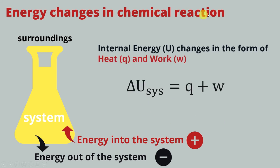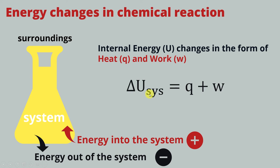In a chemical reaction, the internal energy changes in the form of heat and work. Heat is represented by the small letter Q, and work is represented by the small letter W. We can write the mathematical equation: delta U of system equals Q plus W, where Q is heat and W is work — the sum of these two gives the energy change of the system.